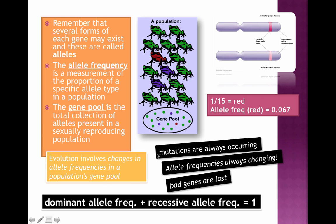Keep in mind that mutations are always occurring, so allele frequencies are constantly changing. Sometimes it may take a very, very long time to see significant changes, because many mutations have self-correcting mechanisms — not every new mutation results in an advantage. In fact, most are probably bad and will get eliminated. This equation is called the Hardy-Weinberg equilibrium, and we'll practice with it later. For now, just understand that evolution involves changes in allele frequencies over time.